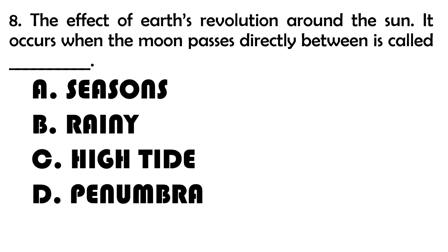Number 8. The effect of Earth's revolution around the sun — it occurs when the moon passes directly between; this is called blank. A. Seasons. B. Rainy Seasons. C. High Tide. D. Penumbra.